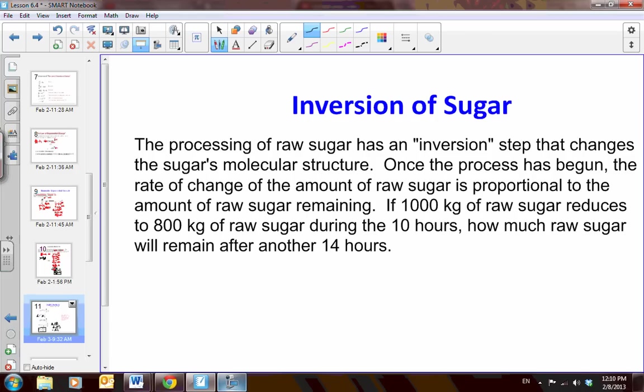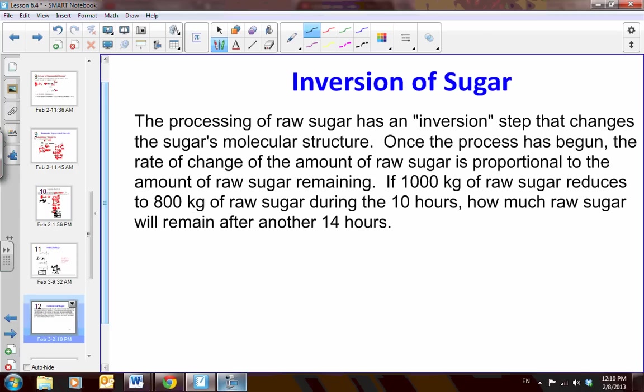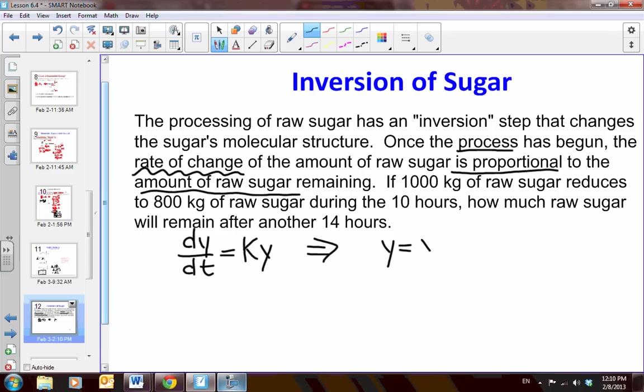Okay, one last problem. And we've got the inversion of sugar. So, we have to look at this problem, and we are told that the process has begun, that the rate of change of the amount of raw sugar is proportional to the amount of raw sugar remaining. Voila! That is exactly what I want to hear. So, the rate of change of my sugar is equal to the amount of sugar proportional to the value. So, since we are given that, we have proven that this is equal to the initial amount, E, to the kt.